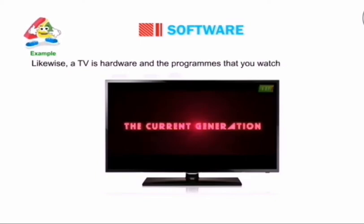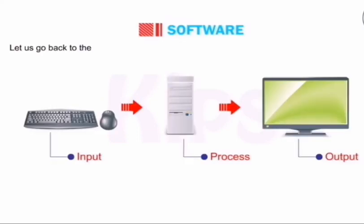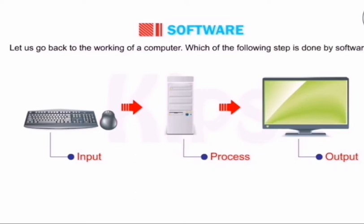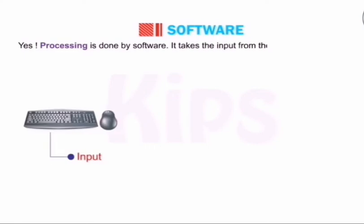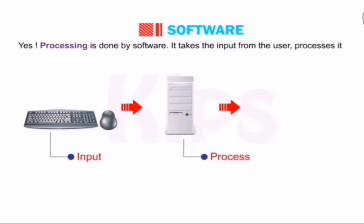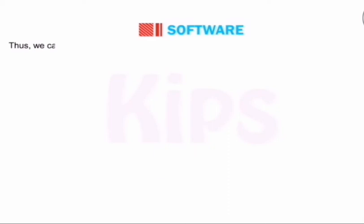In the same way, the television is hardware, but the programs and movies playing on it are software. Now, in the working of a computer, which step is done by software? Input and output are hardware processes, but processing is done by software. The CPU takes input from the user, processes it using software, and displays the result on the monitor.